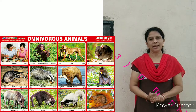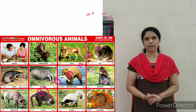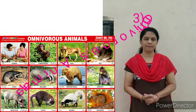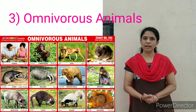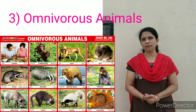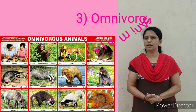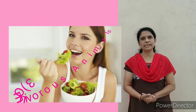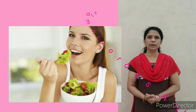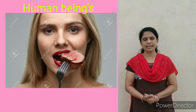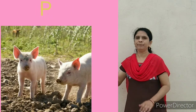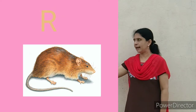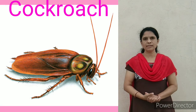The third class is omnivorous animals. Animals that eat both plants and the flesh of other animals are called omnivorous animals. They generally get their food easily because they eat both plants and flesh. We are also animals — all human beings are animals — so we are included in the omnivorous category, because we eat vegetables, grains, and the flesh of other animals. Examples of omnivorous animals are pig, rat, and cockroach.